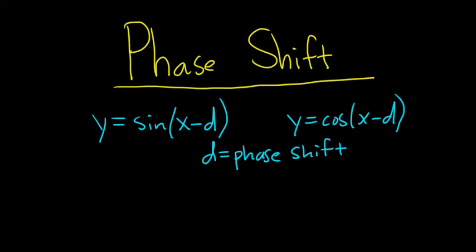We're shifting the graph left and right. Whenever you have a positive value, you're going to go right, so it's a right shift. If you have a negative value, it's a left shift.